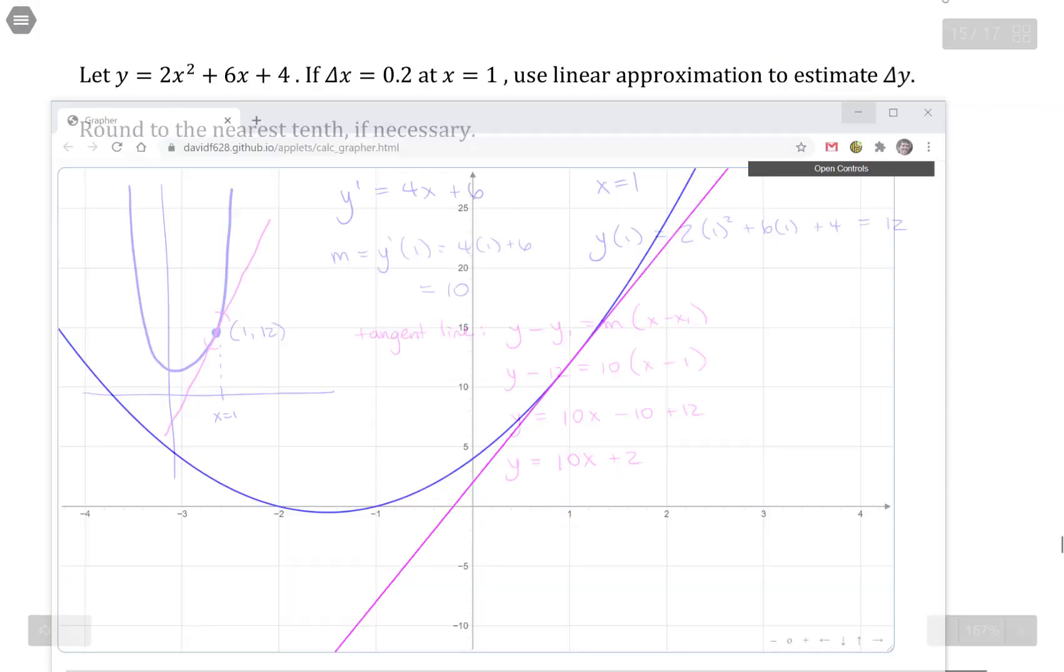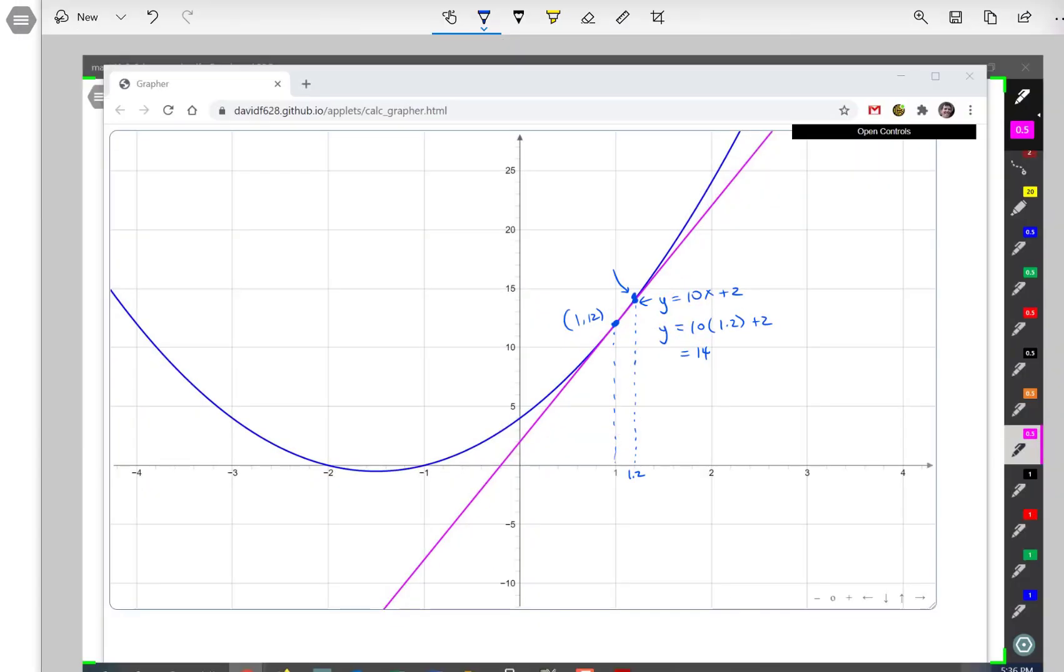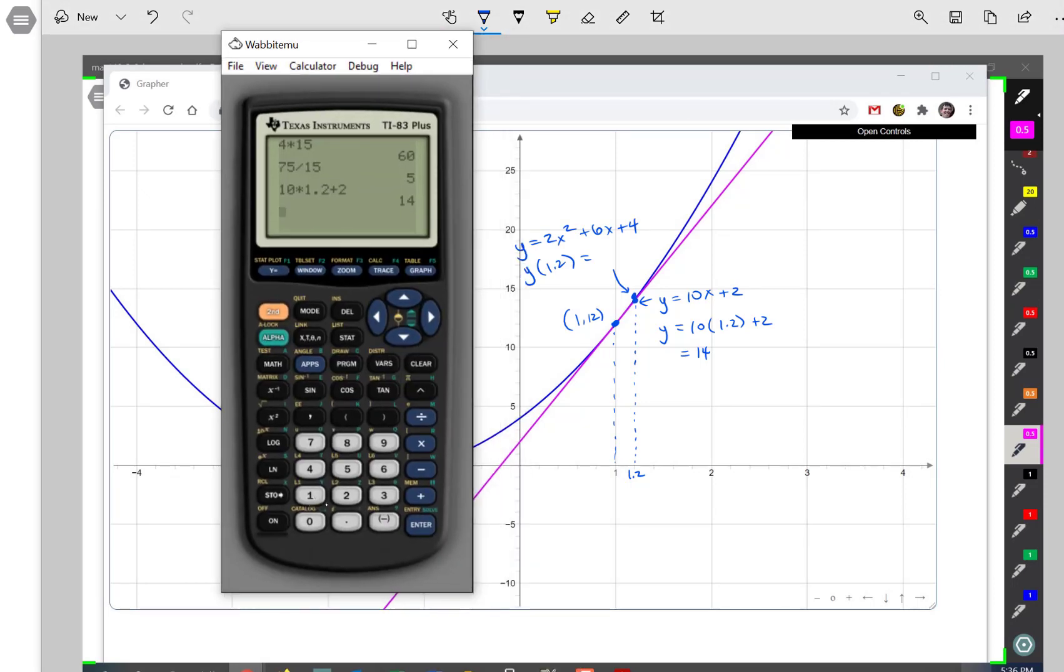And then we have this point here which is the actual point. So the original function, 2x squared plus 6x plus 4. y equals 2x squared plus 6x plus 4. If I evaluate the original function at 1.2, let's see what I get. So that would be 2 times 1.2 squared plus 6 times 1.2 plus 4. Now it's probably not going to be 14, but it should be something really close to 14. Alright, so 14.08.